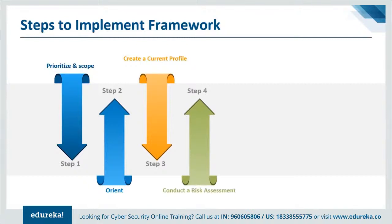Step four is to conduct a risk assessment. This assessment could be guided by the organization's overall risk management process or previous risk assessment activities. The organization analyzes the operational environment to discern the likelihood of a cybersecurity event and the impact that the event could have. It is important that the organization identify emerging risks and use cyber threat information from internal and external sources to gain a better understanding of the likelihood and impact of cybersecurity events.